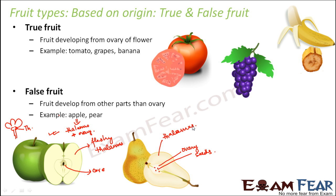In the case of a true fruit, the ovary itself matures or gets ripened, and the ovary itself consists of the seeds. For example, in tomato, the entire tomato is the ovary and inside that you have the seeds. Similarly with banana. So now you understand the concept of true fruit and false fruit.